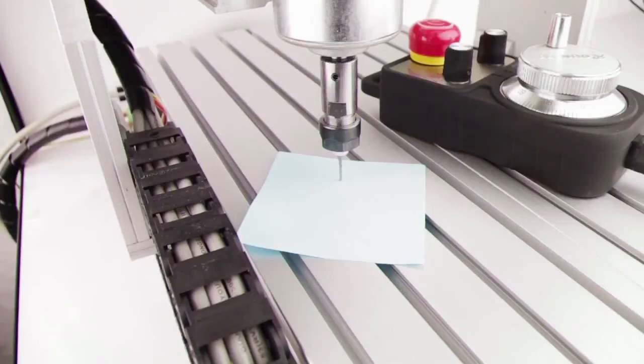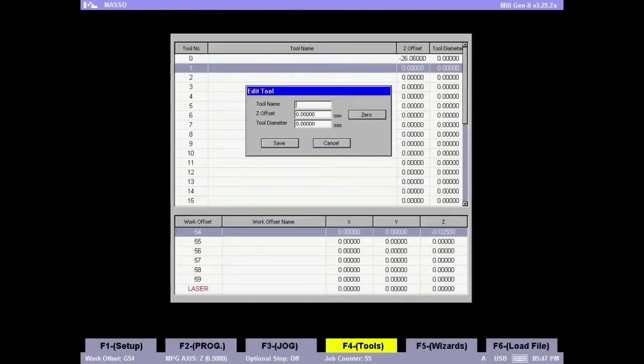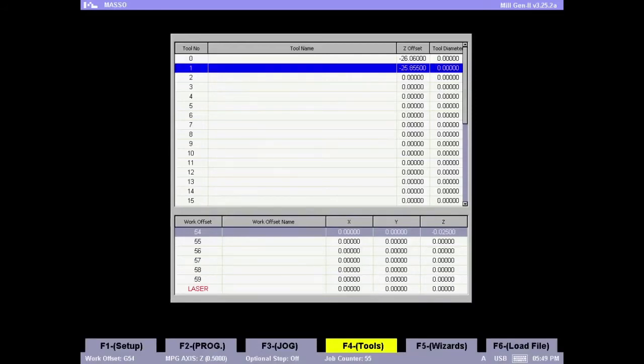Now we will go back to the F4 screen. I'm going to select tool number one, go to the Zero button, press Enter. So it's got the Z values automatically. Press Tab to go to Save, press Enter again to save the values. As you can see on the screen, the Z offset for tool zero and one is slightly different. And that is the difference between the heights of the tools.